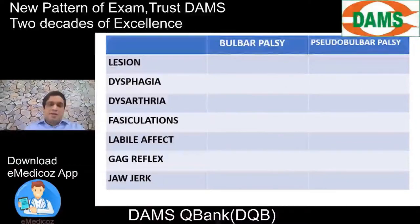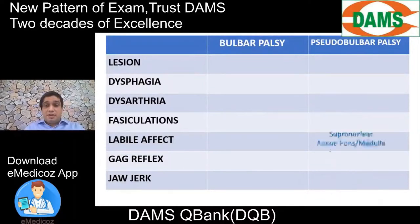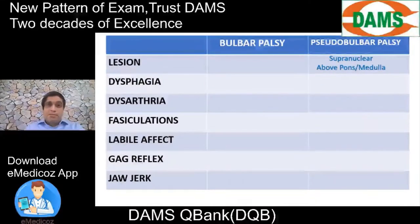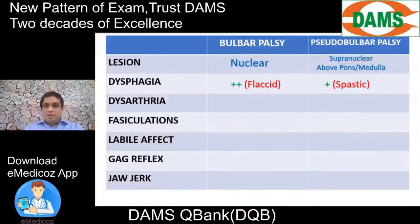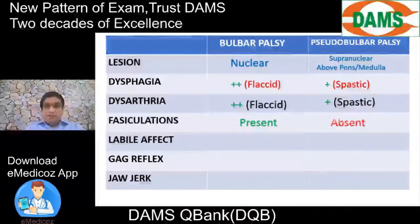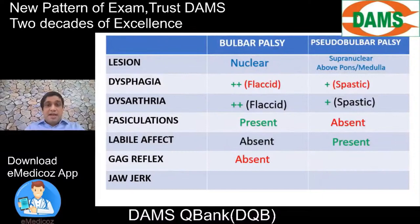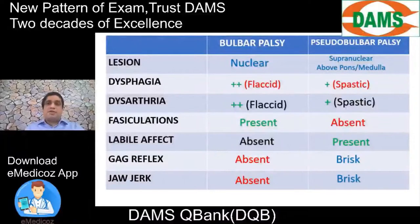Summary of key differences between bulbar and pseudobulbar palsy: In pseudobulbar the lesion is supranuclear — above pons or medulla — involving the corticobulbar tract. In bulbar palsy the lesion is in the medulla or pons involving the cranial nerve nuclei. Dysphagia is flaccid in bulbar, spastic in pseudobulbar. Dysarthria is flaccid in bulbar, spastic in pseudobulbar. Fasciculations are present in bulbar, absent in pseudobulbar. Labile affect is important for pseudobulbar. Gag reflex is absent in bulbar, brisk in pseudobulbar. Jaw jerk is absent in bulbar and brisk in pseudobulbar.